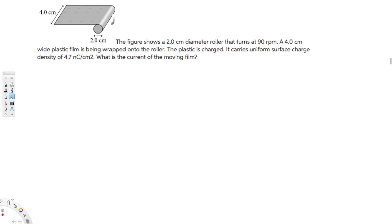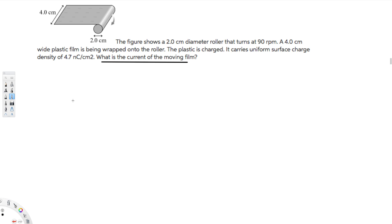Hey, what's going on guys? Let's do this problem. The question is asking: the figure shows a two centimeter diameter roller that turns at 90 revolutions per minute. The four centimeter wide plastic film is being wrapped onto the roller. The plastic is charged — it carries a uniform surface charge density of 4.7 nanocoulombs per centimeter square. What is the current of the moving film?